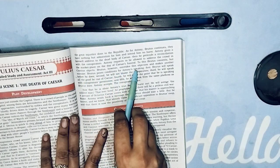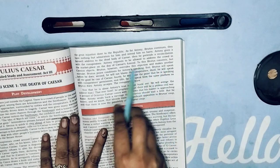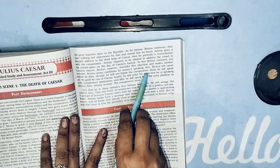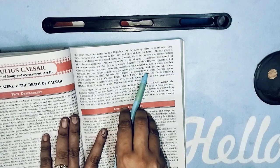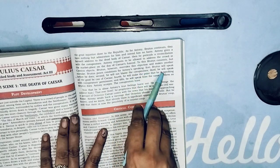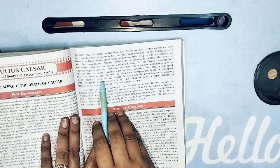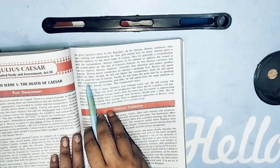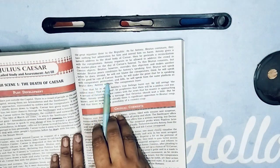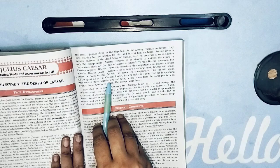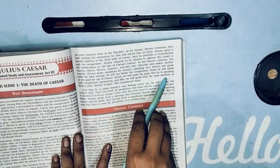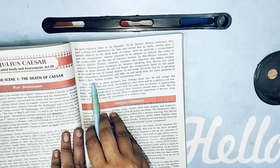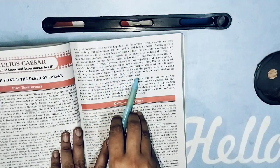Brutus sets conditions for Antony's speaking. First, Brutus will speak before he does. Second, he will not blame the conspirators. Third, he will speak of the good he can of Caesar. Fourth, he will make the point that he is speaking with the conspirators' permission. And fifth, he will speak from the same platform as Brutus does. Antony accepts and the conspirators leave.